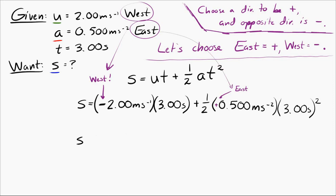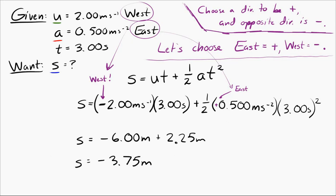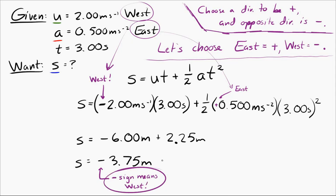We get a displacement s equal to negative 3.75 meters. But this is not the final answer — you have to put it back in the language of the problem. That negative sign needs to be interpreted: since we chose east as positive and west as negative, a negative answer means the displacement is to the west. So the final answer is 3.75 meters west.